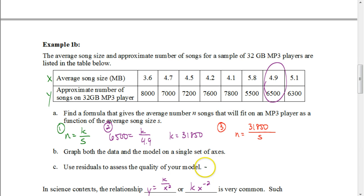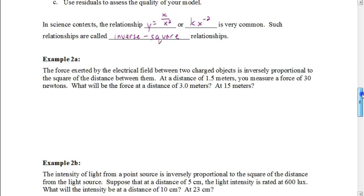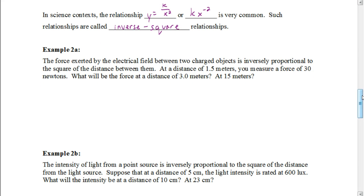Looking at the residual plot, most points are close to the line, but that one anomaly shows the observed was 847 songs less than expected. That's where we end this first video on equations in the form y equals k divided by x — these are hyperbolas. In the next video, we'll look at equations in the form y equals k divided by x squared.